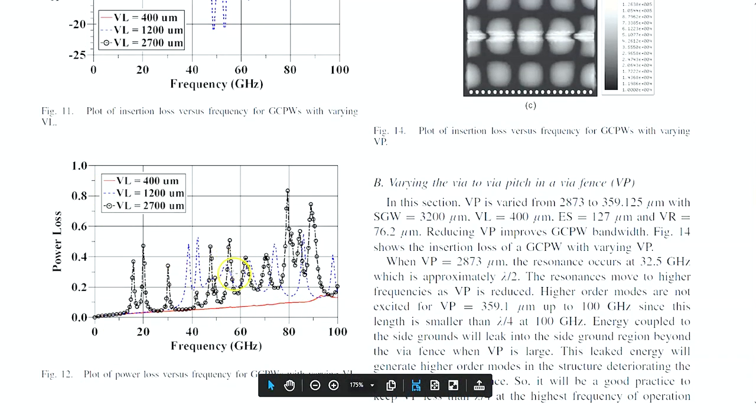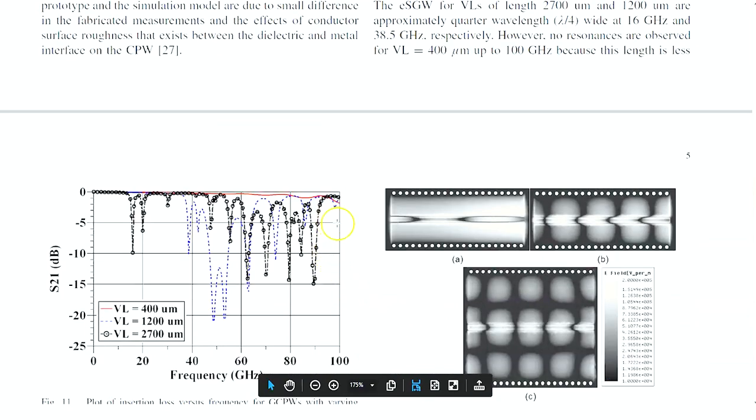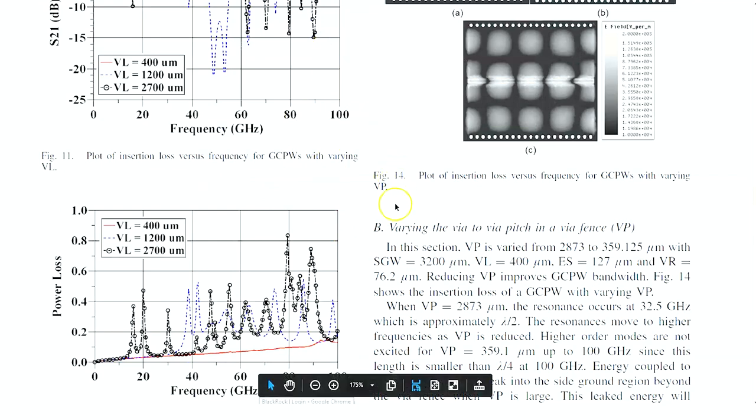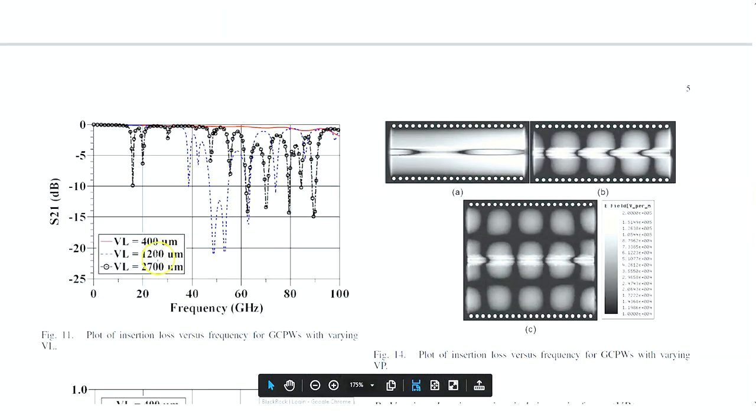This is the plot that you want to look at, the S21 plot. And there's a corresponding power loss plot. I prefer to look at the S21 plot, but the two plots correspond to each other. So here what they're testing is they're actually testing what happens when you change the location of the via with respect to the center of the trace. This distance from the via to the trace is VL. So what you can immediately see here is that as VL is made larger, you actually make these dips, these high loss dips in the insertion loss spectrum, correspond to lower frequencies.